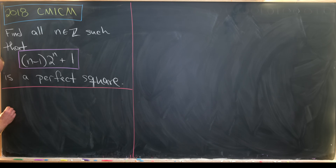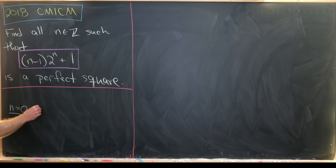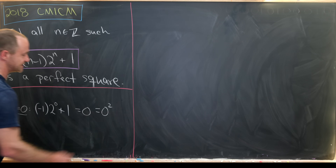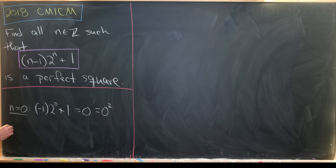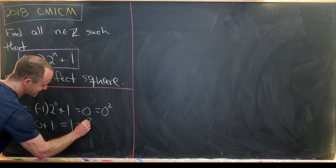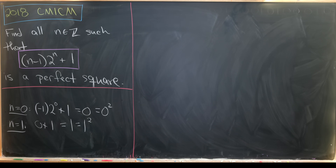Let's start with n equals 0. We get 0 minus 1, which is negative 1, times 2 to the 0 plus 1, which equals 0, and that is 0 squared — a solution. Then n equals 1 gives us 0 times something plus 1, which is 1, and that's clearly 1 squared. So that works as well.